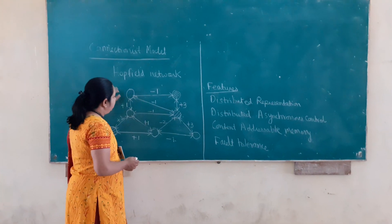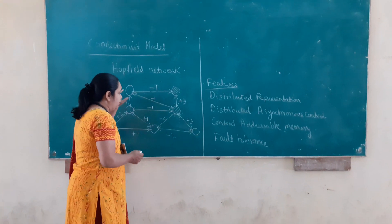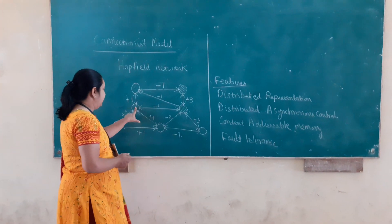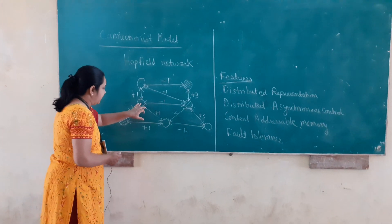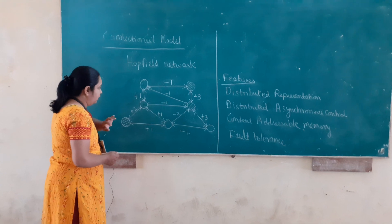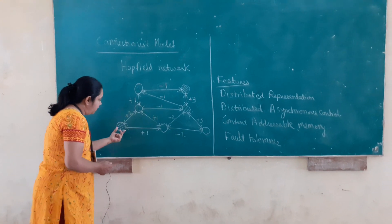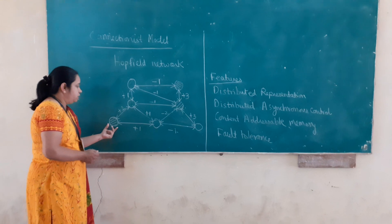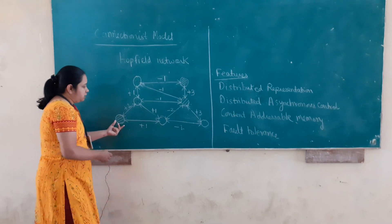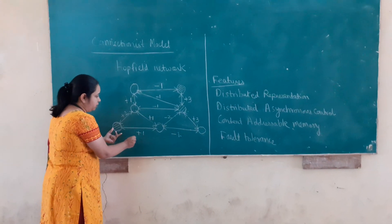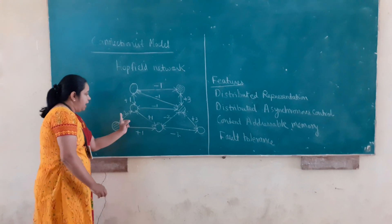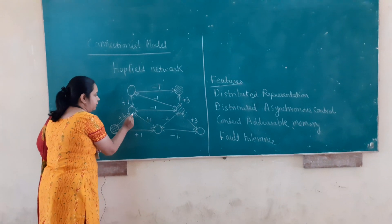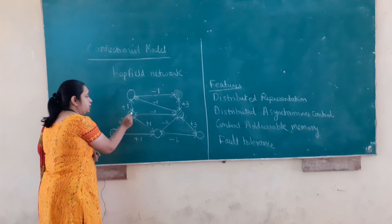Again, take any element at random. Let us say I take this particular element. When I take this processing element, there is one active processing element associated with it. Calculate: this is plus 2 and plus 1, that is 3. There is a positive weight over here, so this will be activated. This is how it works.